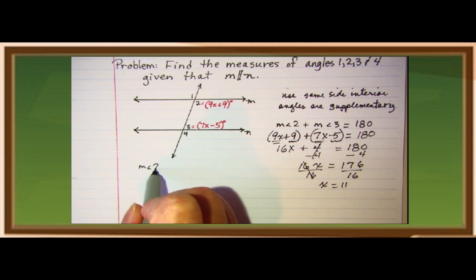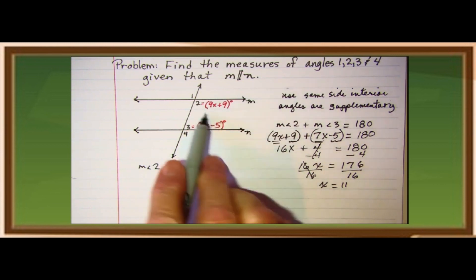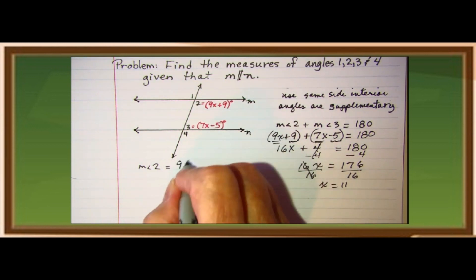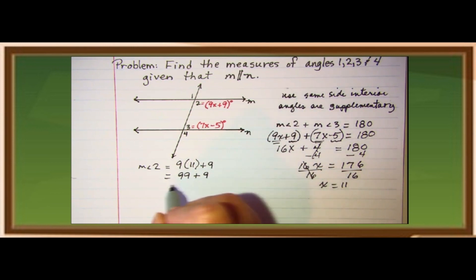So, measure of angle two is equal to 9x plus 9, right? So, you have to substitute the value of x, which is 11. So, that is 9 times 11 plus 9. And, that will give you 99 plus 9. Therefore, measure of angle two is 108.